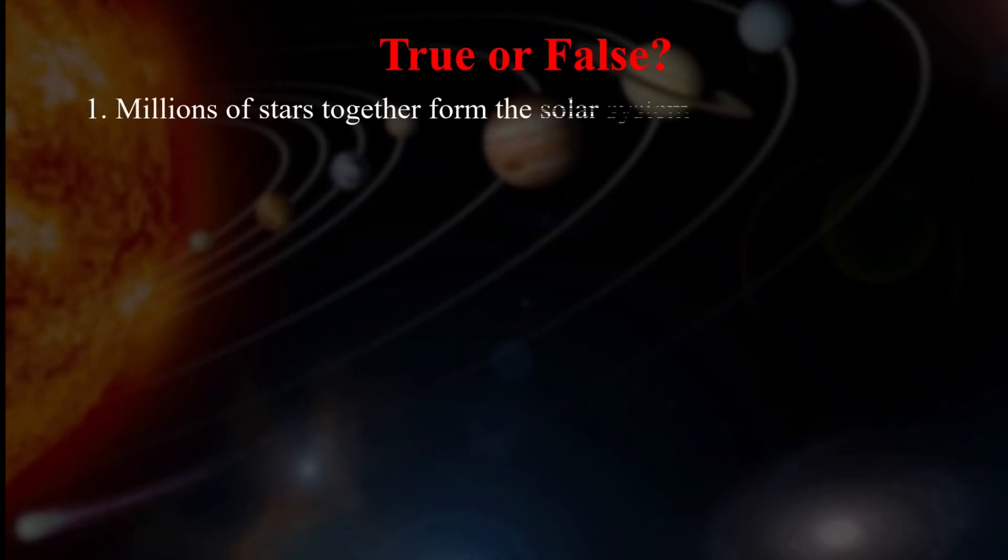True or false. First one, millions of stars together form the solar system. No, millions of stars together form galaxies, not solar system. So this one is false.